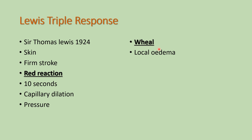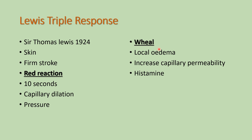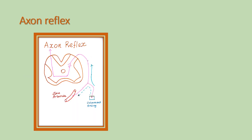The local edema is due to increased capillary permeability. The increased capillary permeability is mainly due to the release of histamine from mast cells. That histamine produces vasodilation and increased capillary permeability, which produces the wheal. After the wheal, the third response is the flare.